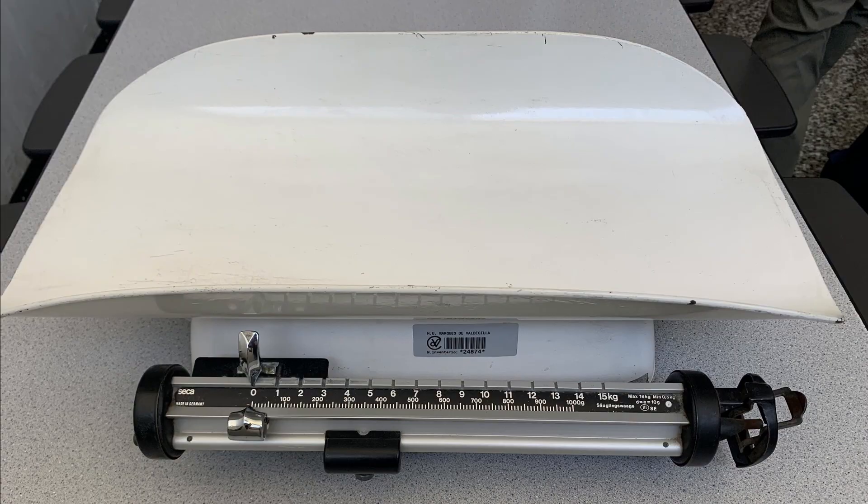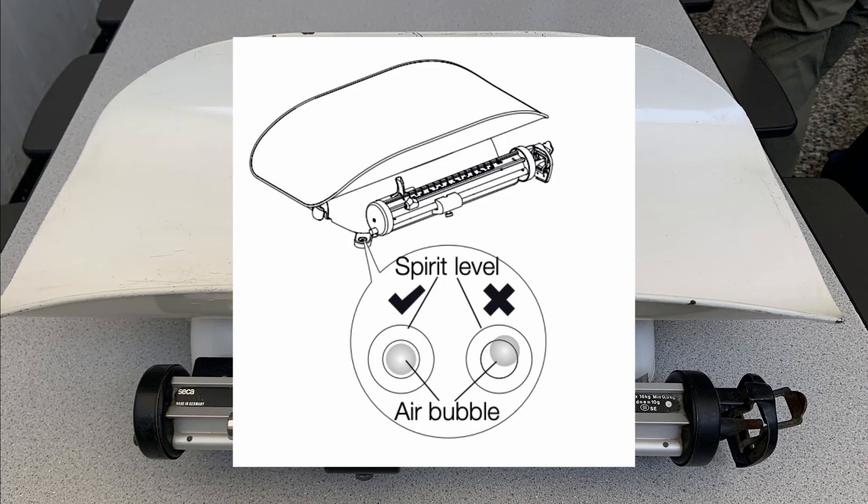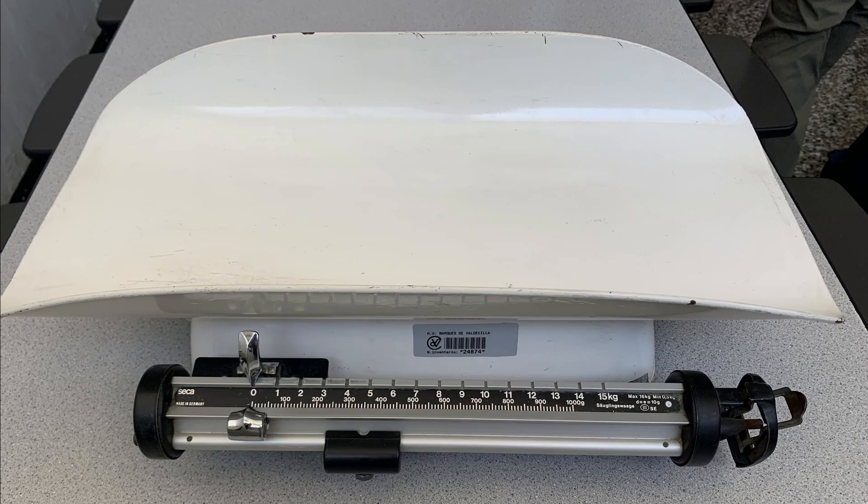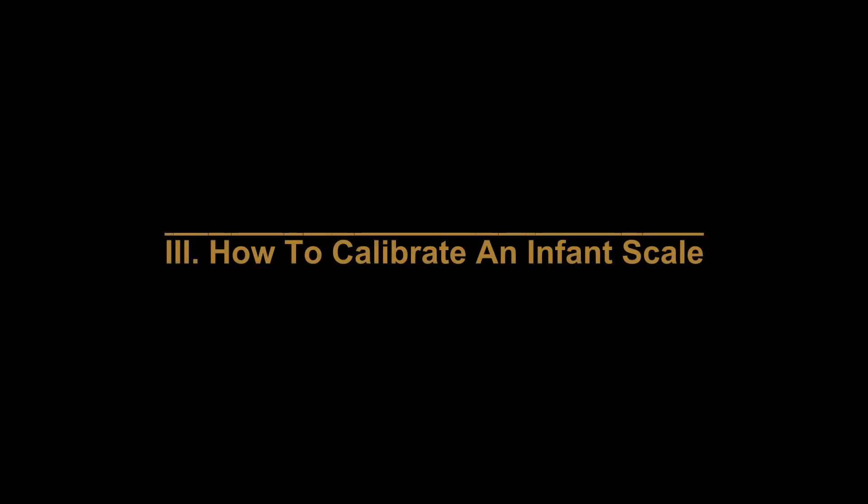The entire infant scale must be level in order to accurately weigh the infant. The level of the infant scale can be determined by a level indicator if present. The scale is level when the air bubble lies entirely within the circle or lines. If your scale does not have a level built in, an external level can be placed inside the weighing basket to ensure the scale is leveled.